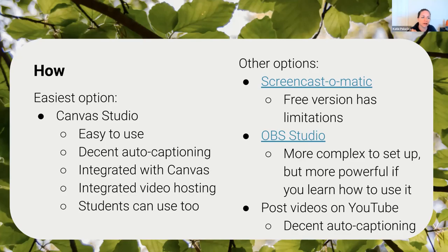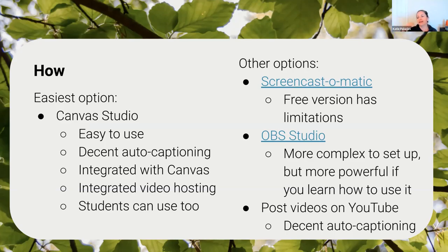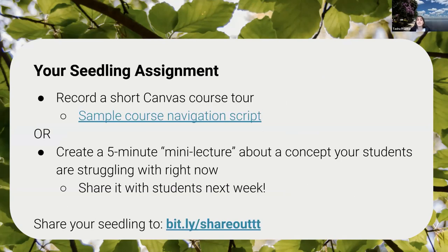As someone who used Screencast-O-Matic for a long time, I'm finding it's hard to use both Screencast-O-Matic and Canvas Studio. You kind of have to go all in with one or the other, because since it's the same software, it conflicts — when you have Screencast-O-Matic installed and then go to Canvas Studio, it tries to install it locally and you'll get an error. If you're new to it, just choose one, because especially with those two, they're essentially the same product in slightly different deliveries.